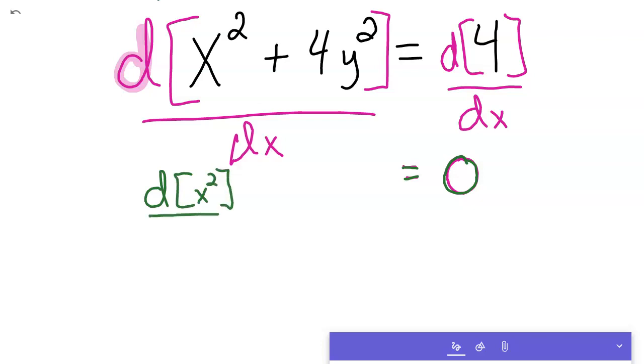So derivative of x squared with respect to x, great, we can do that one with the power rule. Plus the derivative of 4y squared with respect to x. Uh-oh, that one's going to be a problem. We're going to have to use the chain rule there.